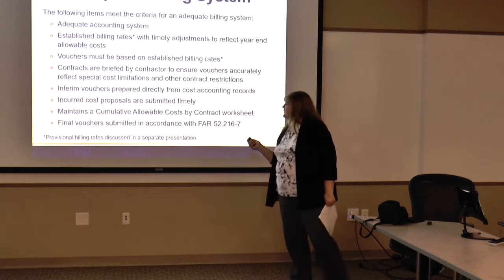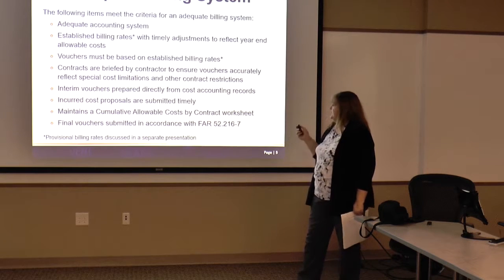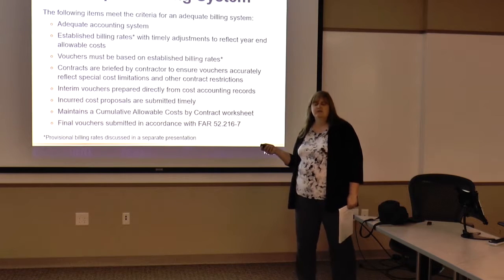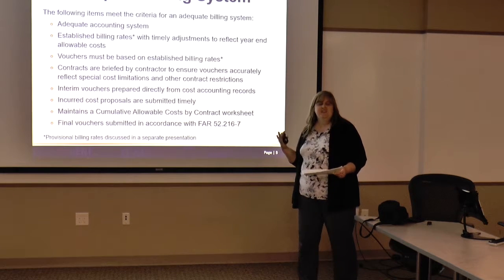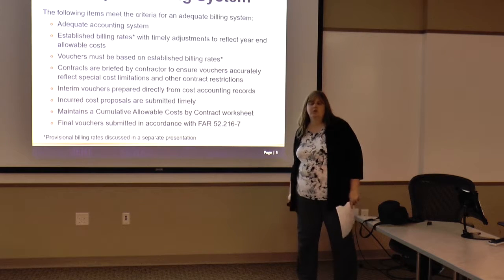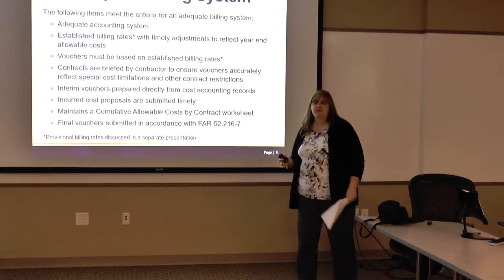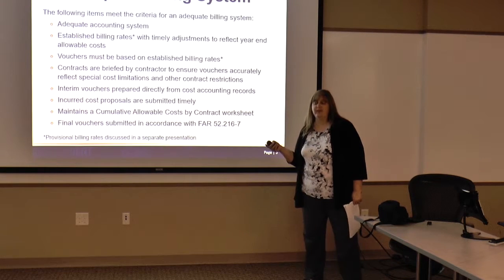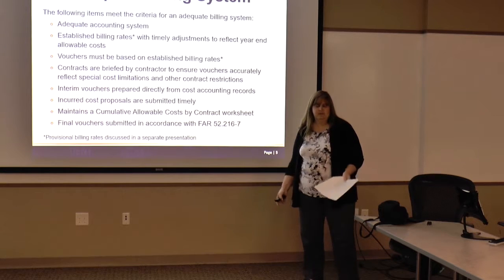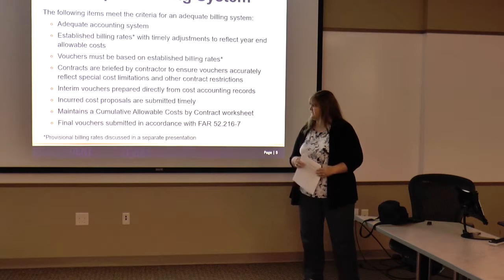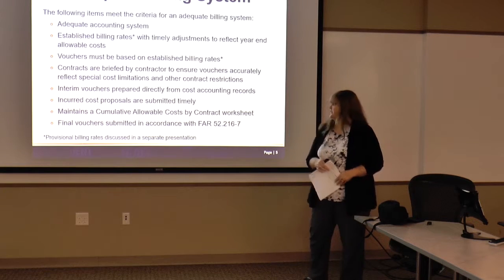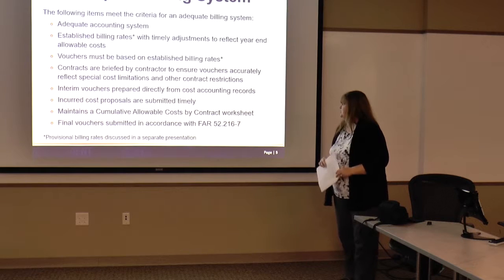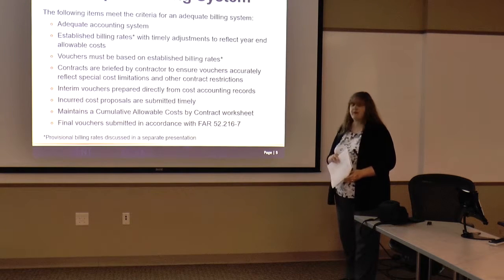Incurred cost submissions — proposals must be submitted timely. You must maintain a Schedule of Direct and Indirect Cost rates worksheet. An incurred cost submission includes Schedule I. The costs worksheet basically takes all the costs you incurred for all contracts individually so you can queue up the total. That's also important at year-end when you submit your final public voucher, because the ACO will use it as a base to close out the contract. A final voucher must be submitted according to FAR 52.216-7.